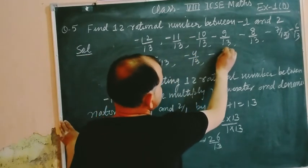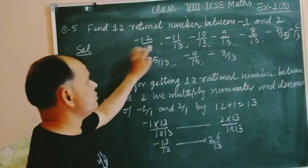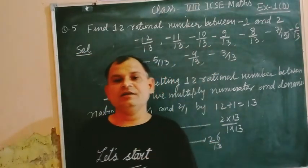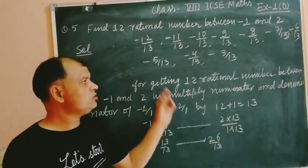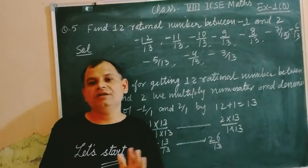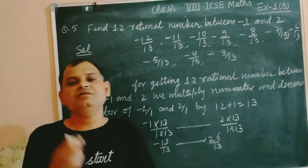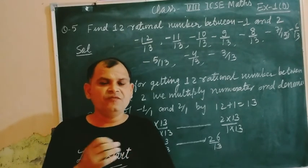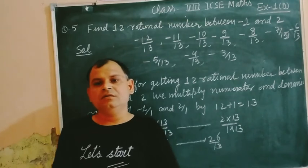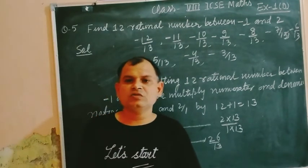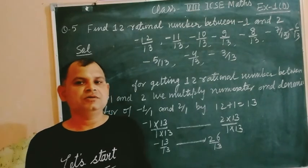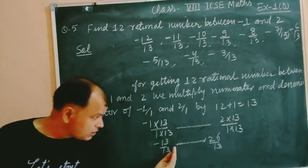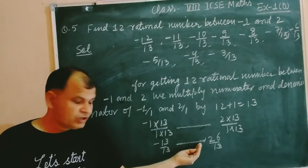Minus 5 upon 13, minus 4 upon 13, minus 3 upon 13. These are 10 rational numbers which we can easily obtain between minus 1 and 2. You know that there are infinitely many rational numbers between given two rational numbers, so your answer may be different than me or other students. Don't think about this.